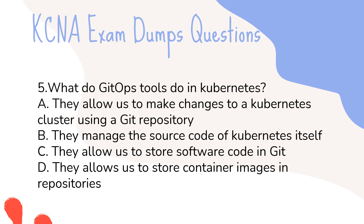Question 5: What do GitOps tools do in Kubernetes? A. They allow us to make changes to a Kubernetes cluster using a Git repository. B. They manage the source code of Kubernetes itself. C. They allow us to store software code in Git. D. They allow us to store container images in repositories.